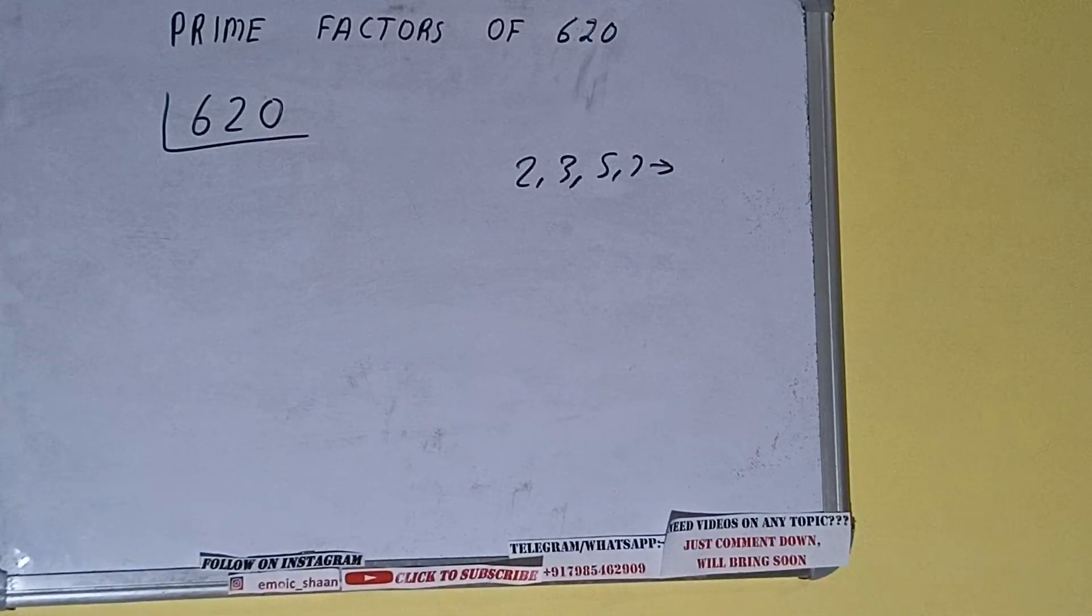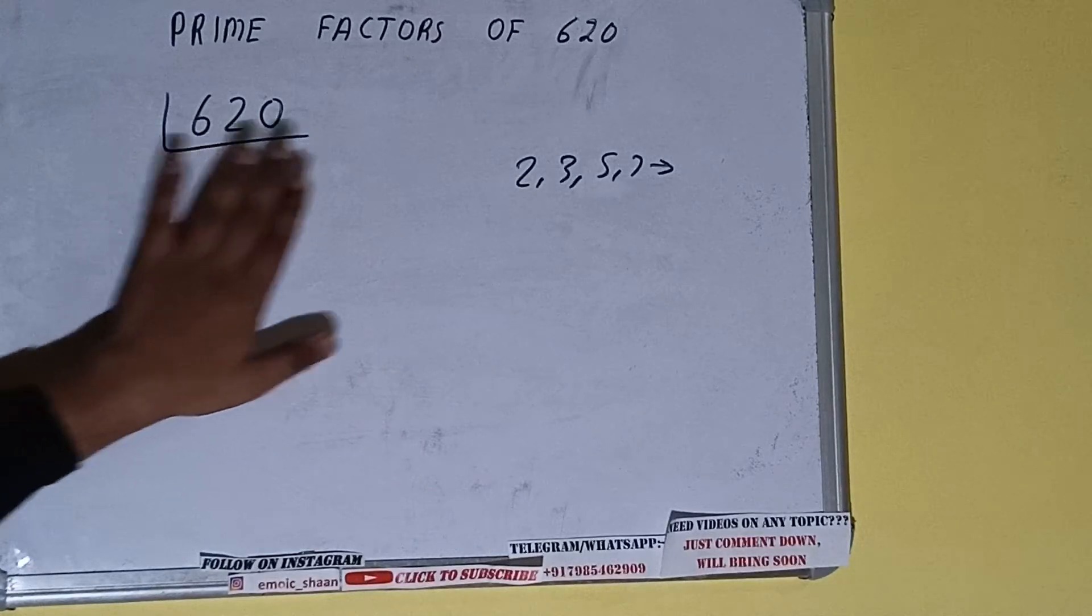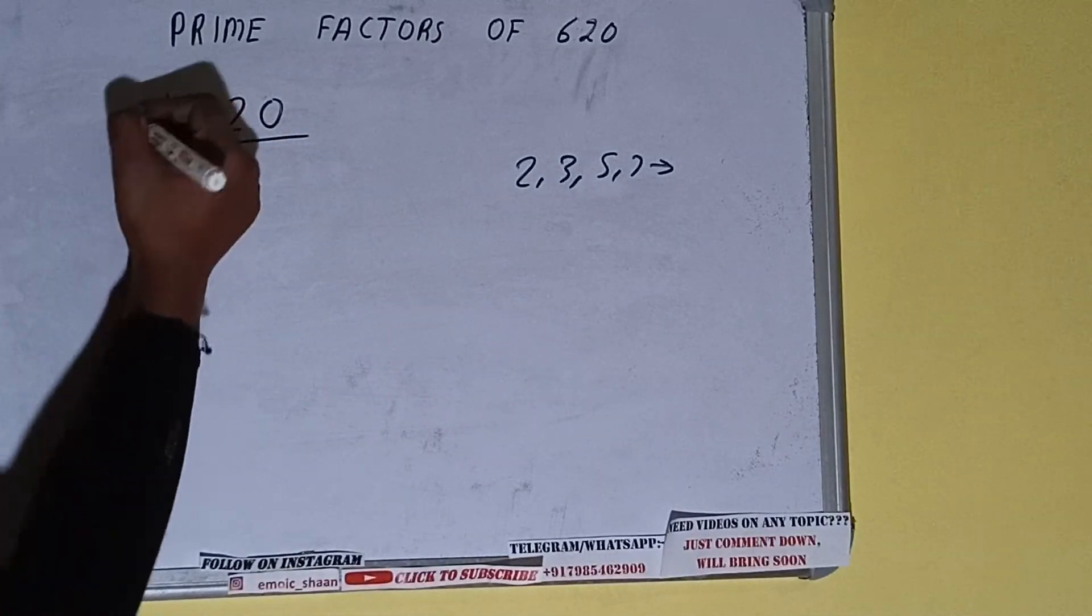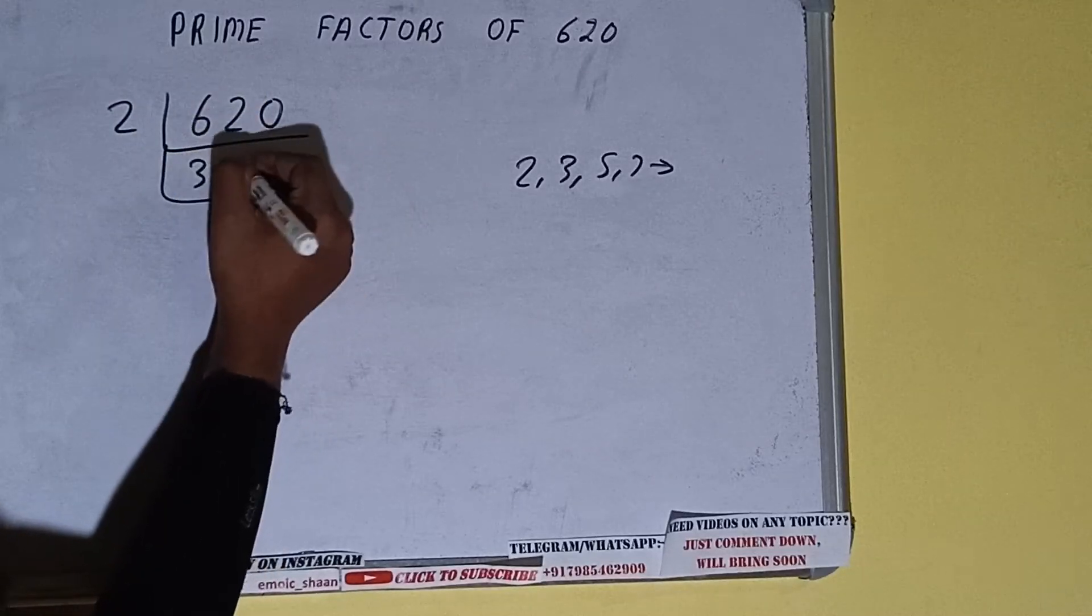So we'll check with the lowest prime number we have, that is 2. Is the number 620 divisible by 2? Yes, it is because the number is even and we'll be having 310.